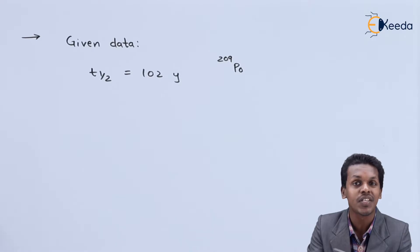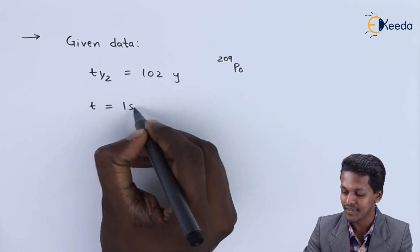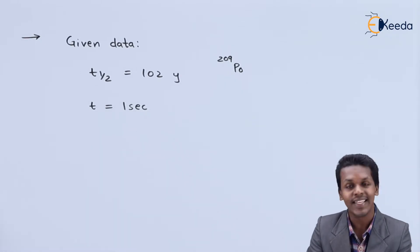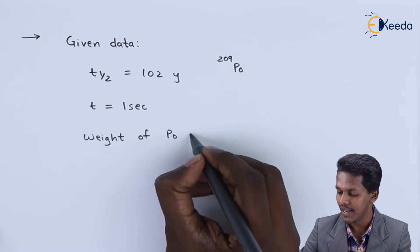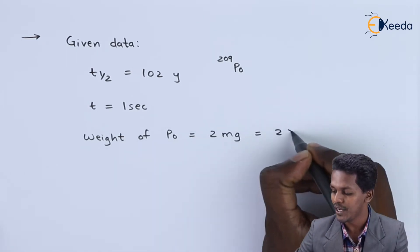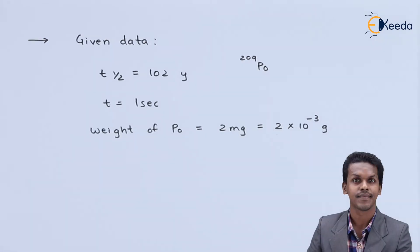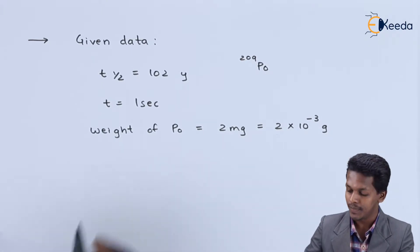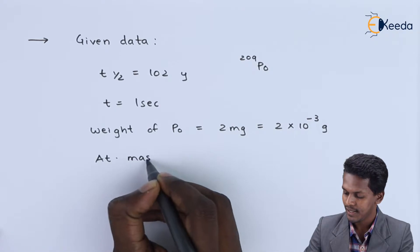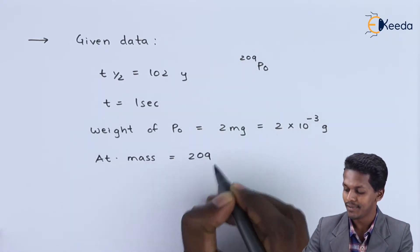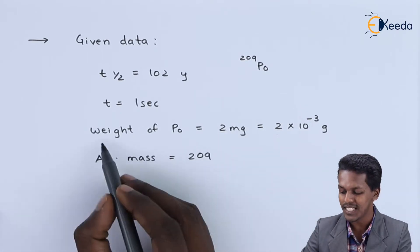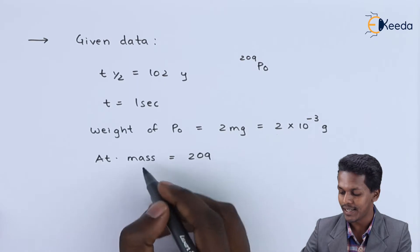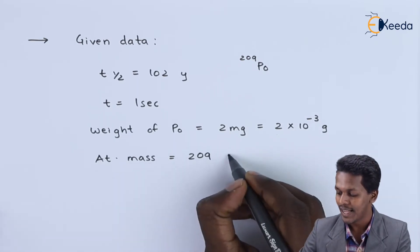The time duration in which we observe the change is one second. The amount of substance given is 2 milligrams, which we can write as 2 × 10⁻³ grams. The atomic mass of polonium is 209 unified mass units, so since we are working in grams, the atomic mass is 209 grams per mole.